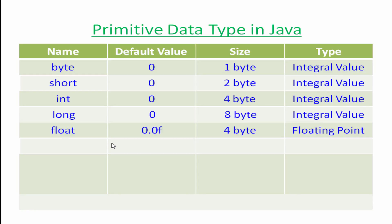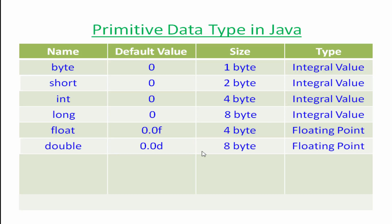The next basic data type is floating point and its default value is 0.0. If we want to store integers we will use integral values, but if we want to use floating point or decimal values, we will use floating point types. Memory allocated for a float variable will be 4 bytes, and if we have a big value we can use the double data type, which stores 8 bytes.